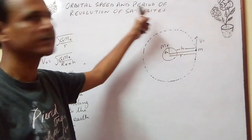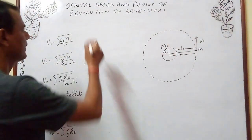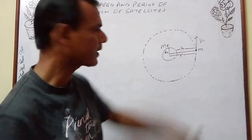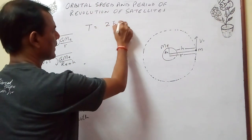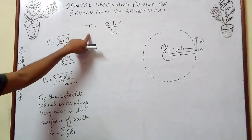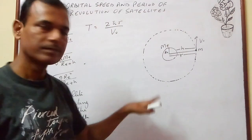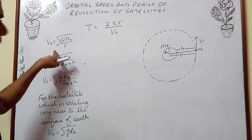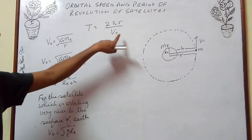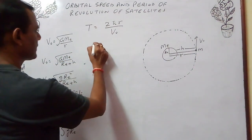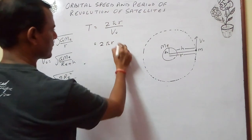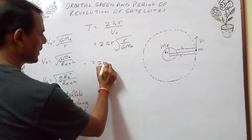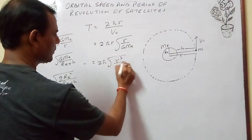If T is the period of revolution of the satellite, then T equals total distance traveled divided by orbital velocity. In one complete revolution, total distance is 2πr, so T equals 2πr/V0. Substituting V0 equals the square root of G·Me/r, we get T equals 2π times the square root of r³/(G·Me).